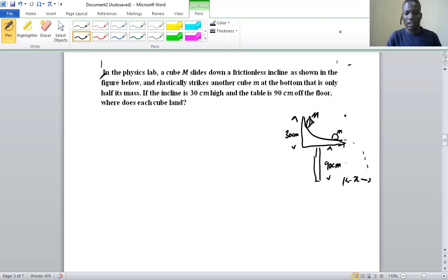So we have the question here. In the physics lab, a cube M slides down a frictionless incline as shown in the figure below. I'm not able to get the figure but that is the rough illustration here. And elastically strikes another cube m, that's small letter m, at the bottom that is only half its mass. If the incline is 30 cm high and the table is 90 cm off the floor, where does each cube land?